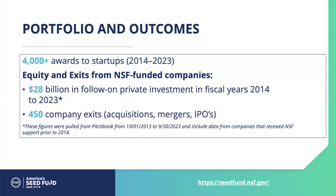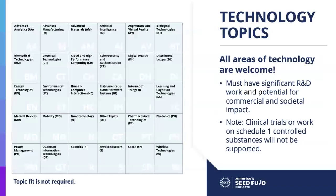Please note that these are only the publicly available data. A little bit of information about the type of technology that we fund. NSF's SBIR STTR program is novel in the sense that we are tech agnostic — topic fit is not required. However, we do have a variety of topic areas for you to choose from, and you also have the opportunity to fit into the 'other' topic area. We welcome all areas of technology, but the core essential component is that you have significant R&D work and potential for commercial and societal impact. Please note that clinical trials or work on Schedule I controlled substances are not supported by our program.